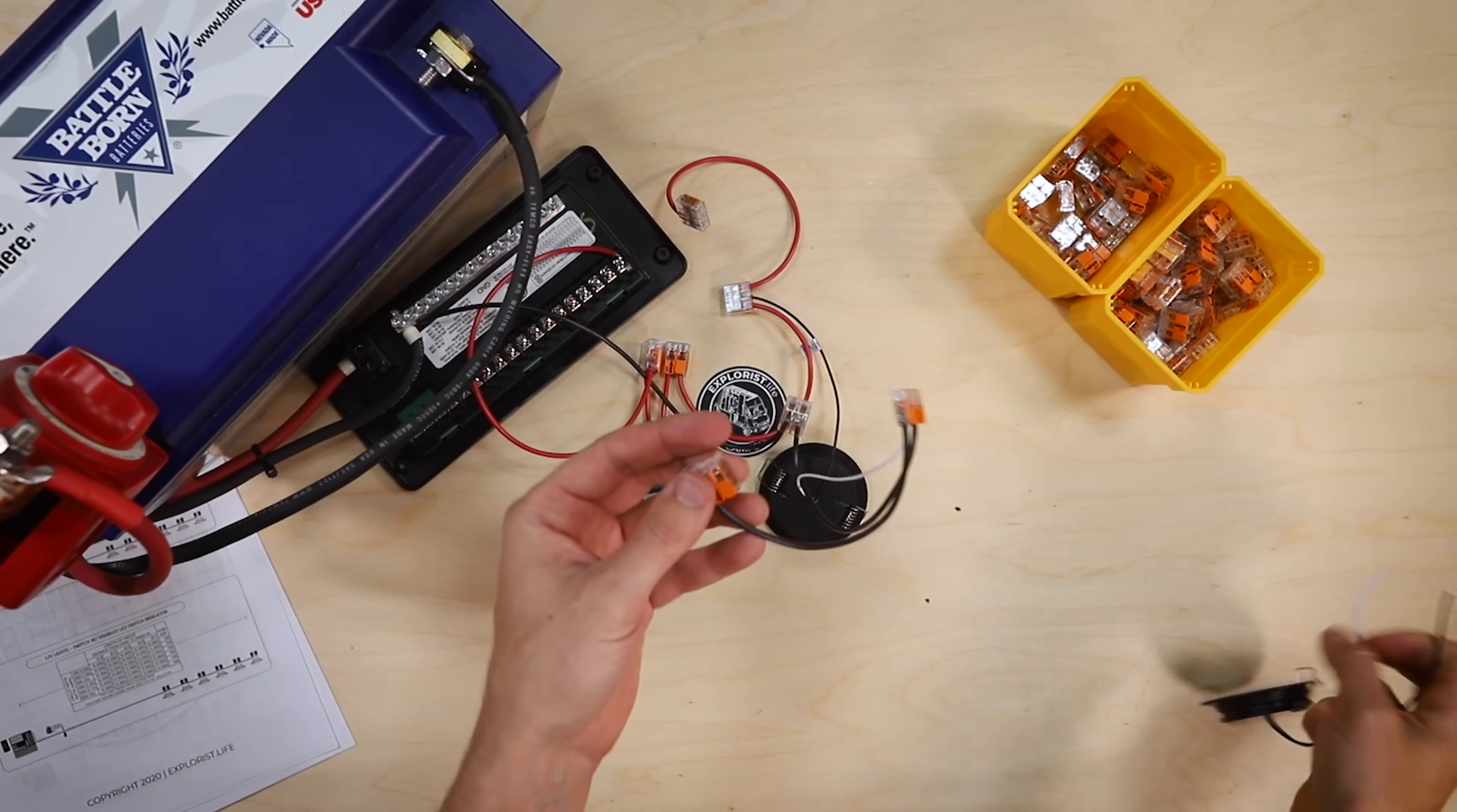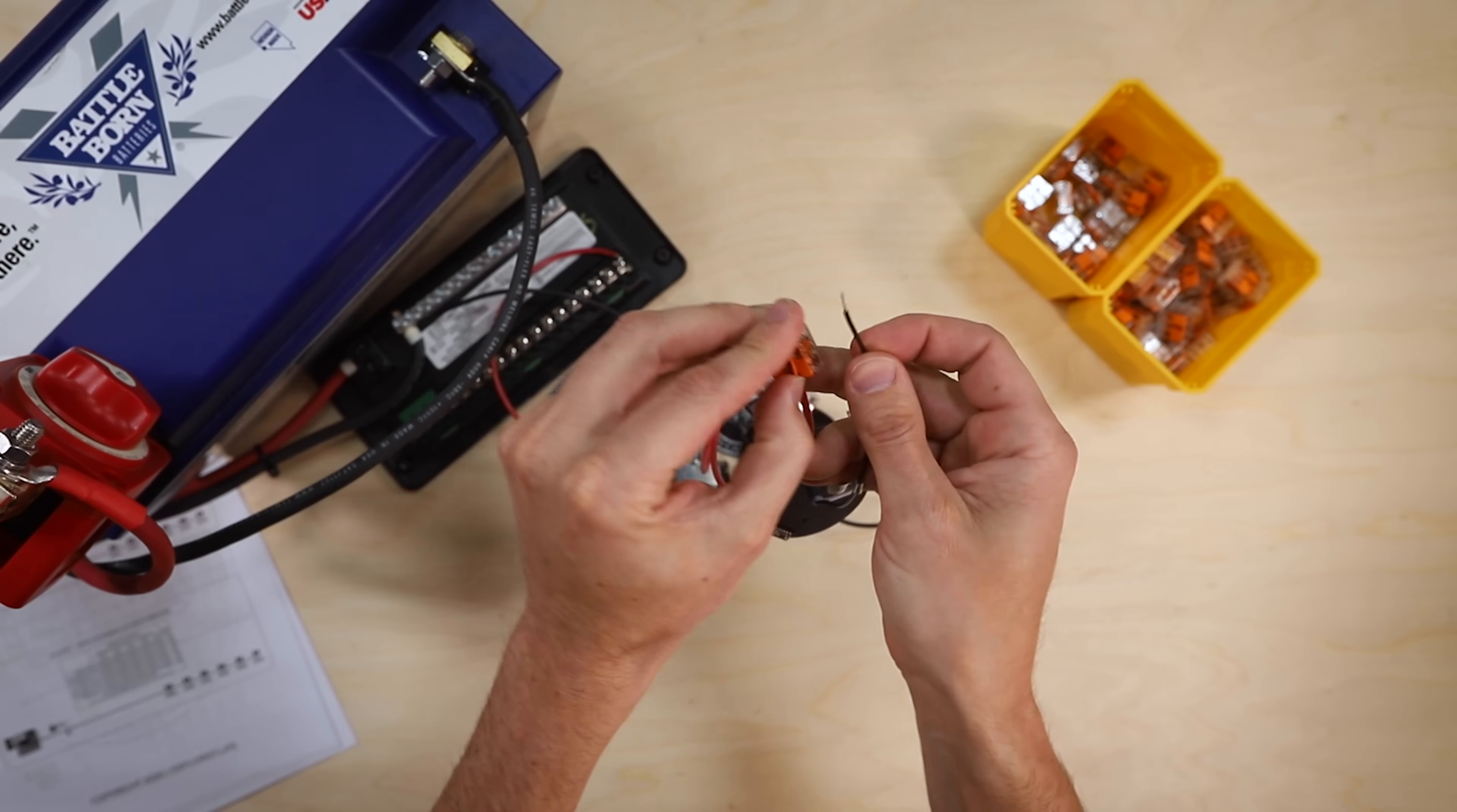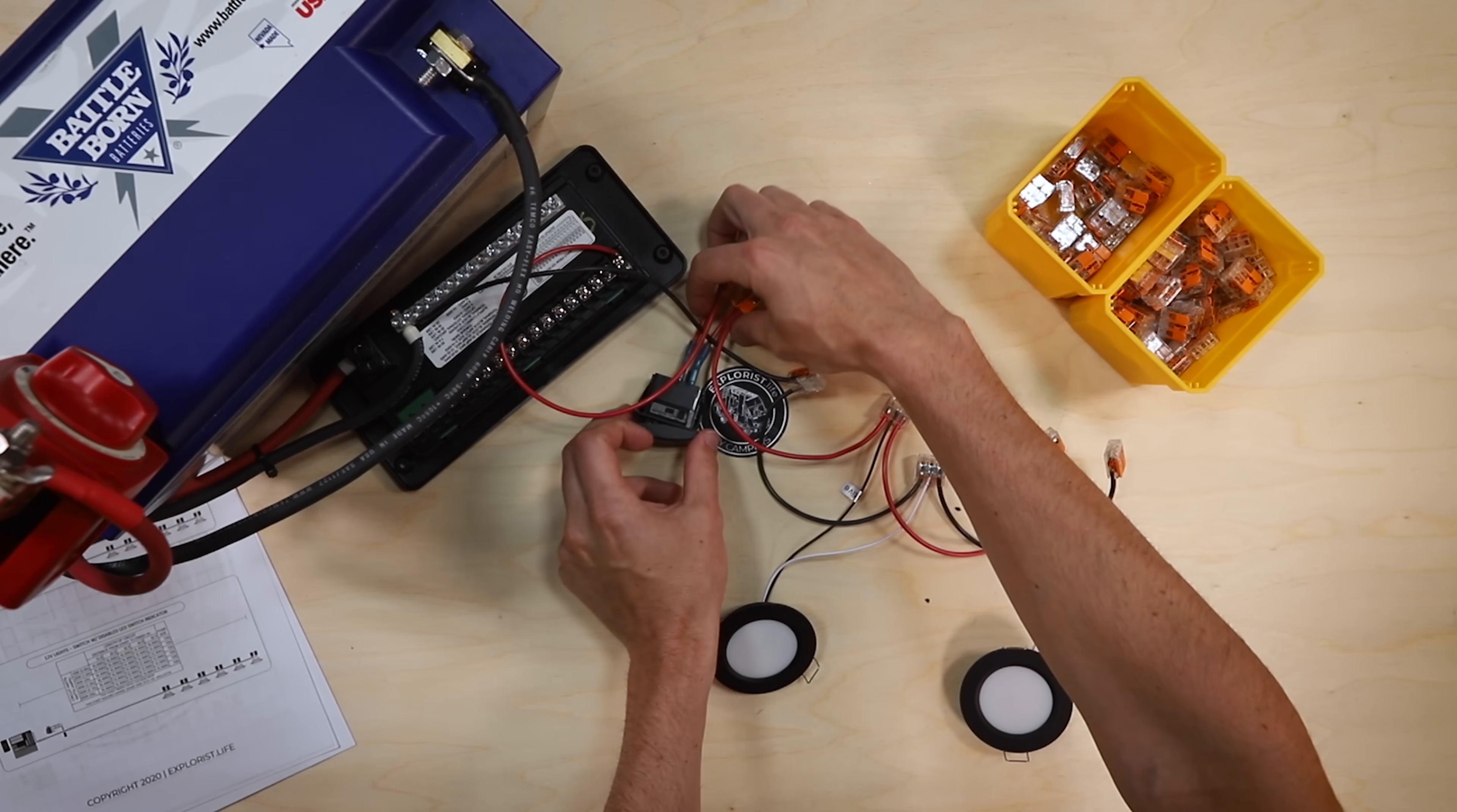And then we can add more lever nuts to the ends of these two wires. We can put our next light in, remembering that white is negative on these lights. Now we have a nice string of lights.